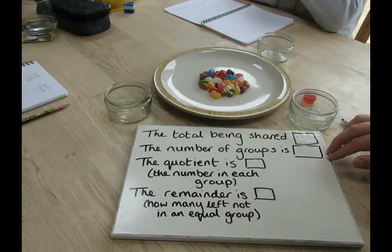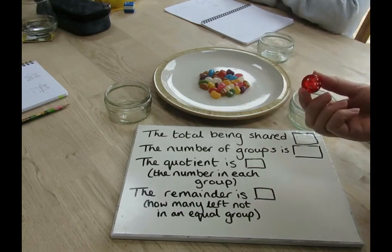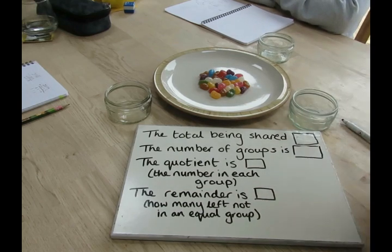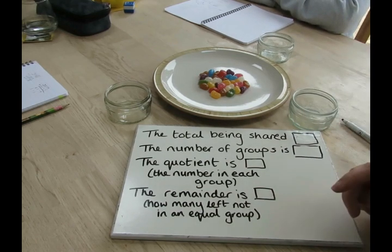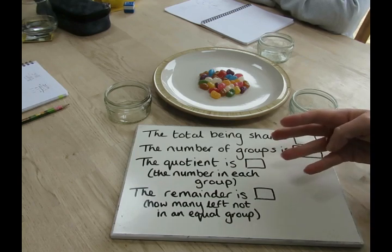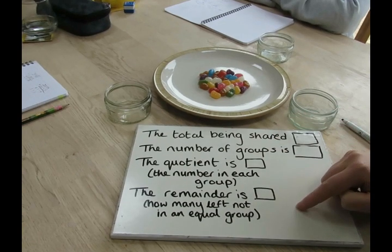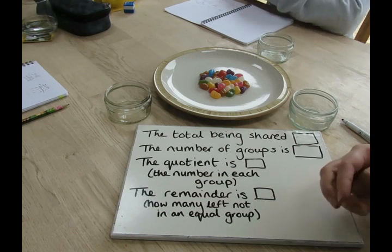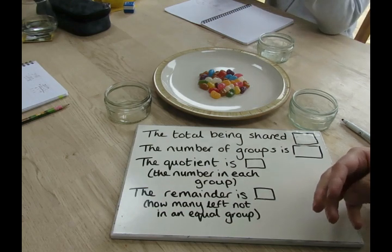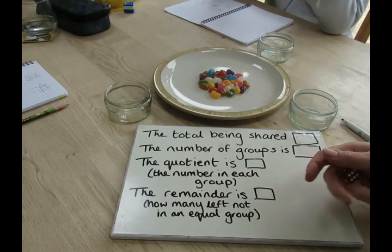We're going to create the number of groups we share into by rolling the dice. Once we've shared the jelly beans out into that number of groups, we're going to identify what the quotient is — which just means the answer, or the number in each group — and we're going to identify whether we've got a remainder or not. We want to get a remainder because we keep the remainder as winnings, so the bigger the remainder, the more jelly beans we get to eat.